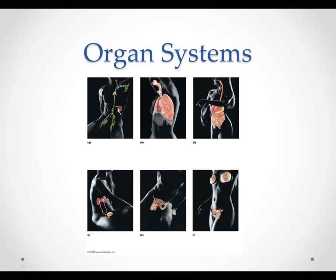The lymph nodes and lymphatic vessels are part of the lymphatic and immune system. The nose, pharynx, larynx, trachea, lung, and bronchus make up the respiratory system. The digestive system consists of the esophagus, stomach, liver, large and small intestine, rectum, and anus. The urinary system consists of the kidneys, ureters, and the bladder. And the reproductive system — you can refer to your textbook pages five and six for those structures.